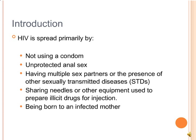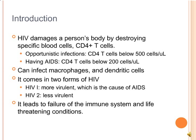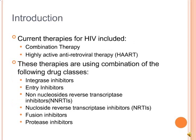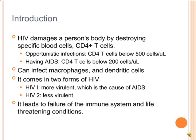HIV damages a person's body by destroying specific blood cells — CD4 T cells. An opportunistic infection occurs when the CD4 T cells fall below 500 cells per microlitre. HIV can also infect macrophages and dendritic cells. It comes in two forms: HIV-1, which is more virulent and is the cause of AIDS, and HIV-2, which is less virulent but can still progress to AIDS, leading to failure of the immune system and life-threatening conditions.